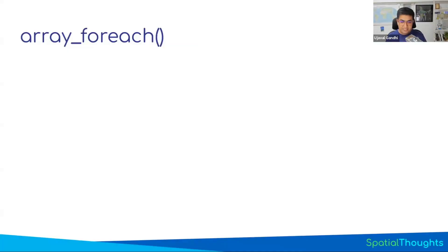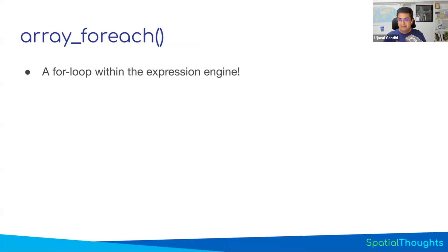The next function to learn is called array_foreach. Array foreach means you now have a for loop within your expression engine. Remember, you can do aggregate expressions where you can evaluate one feature against all the features, but you can do it only once. What if you want to do it 10 times, like in 10 different layers? You can now write a for loop — do multiple things within a single expression. This is the function that allows you to do this.